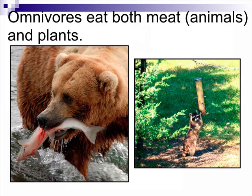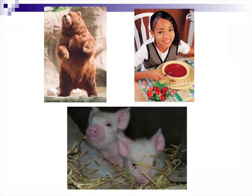Omnivores are animals that will eat both meat and plants — they'll eat anything. Like the raccoon that wrecks my garbage at home. We usually think about the bear as well. Pigs will eat anything, and of course most people will eat anything too.